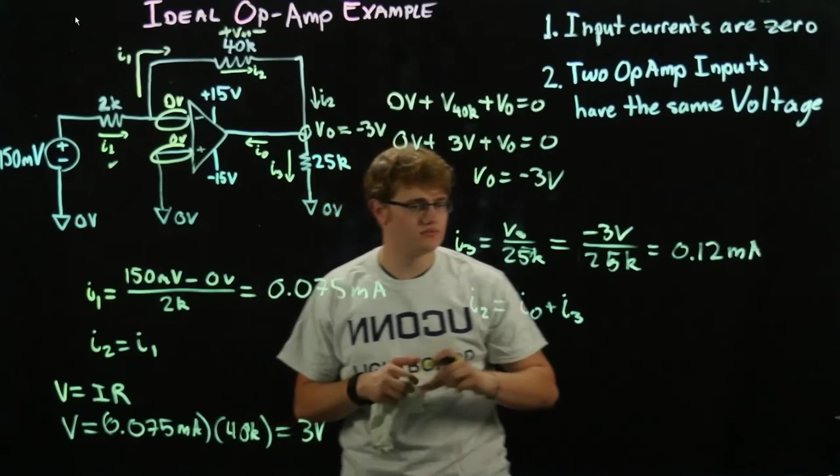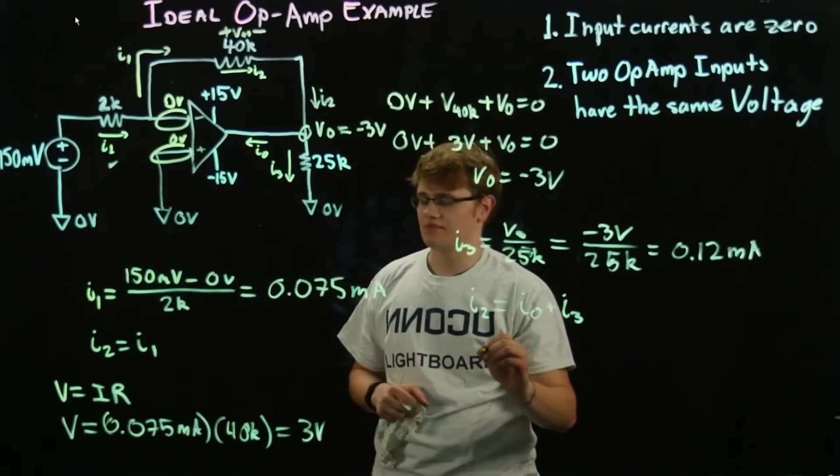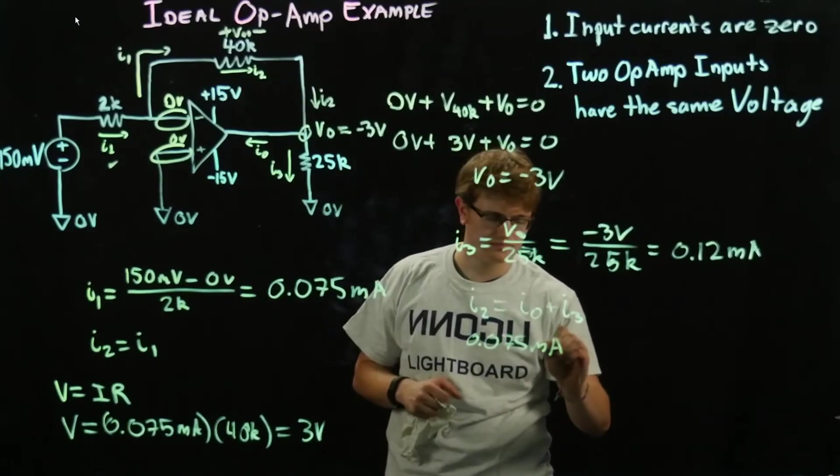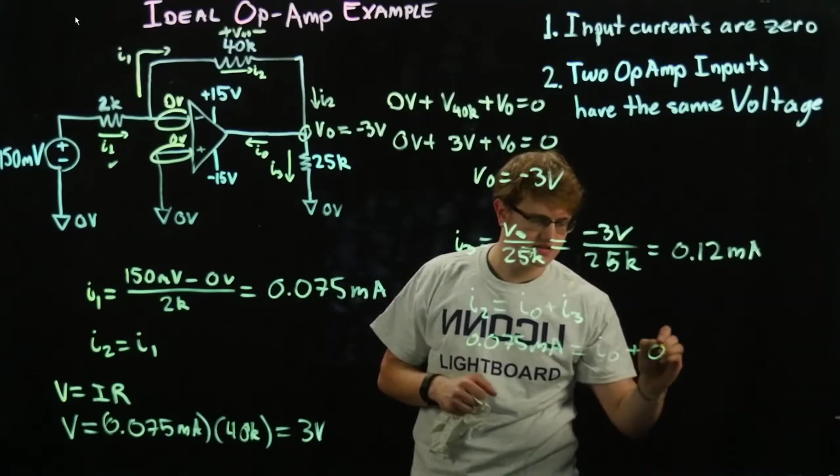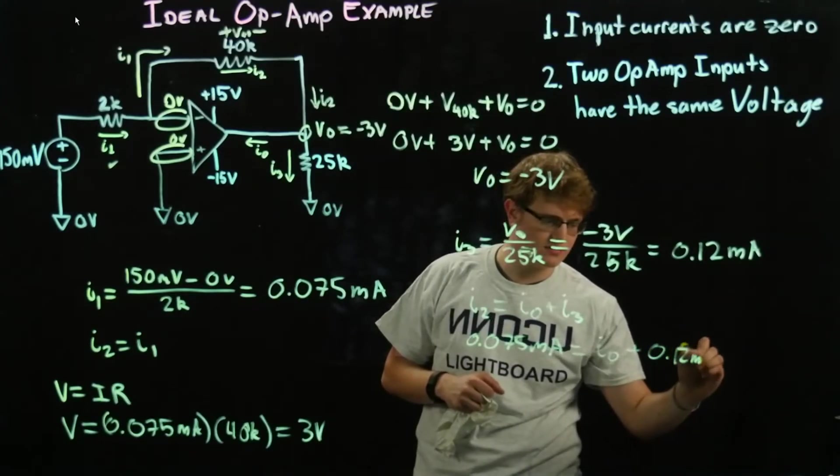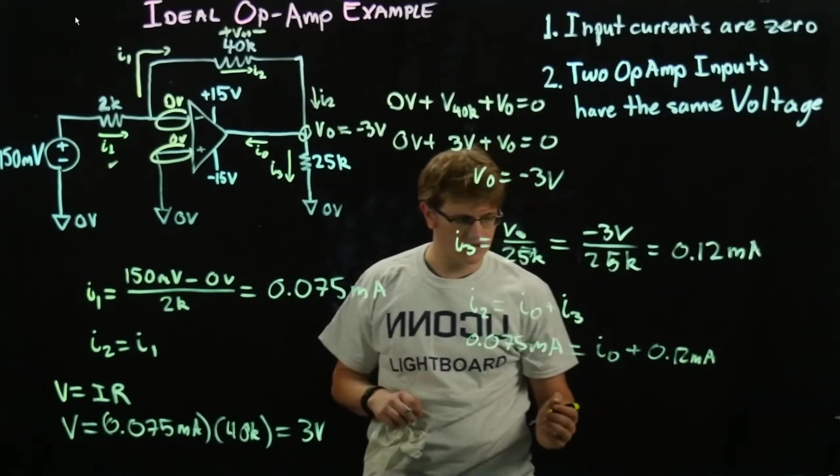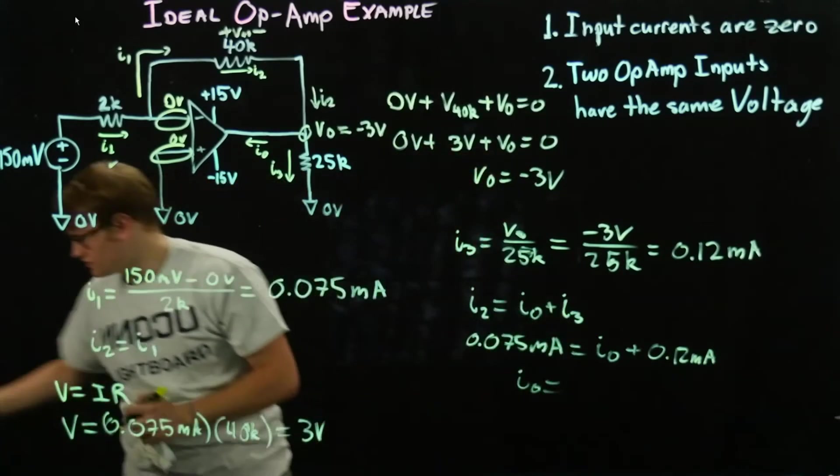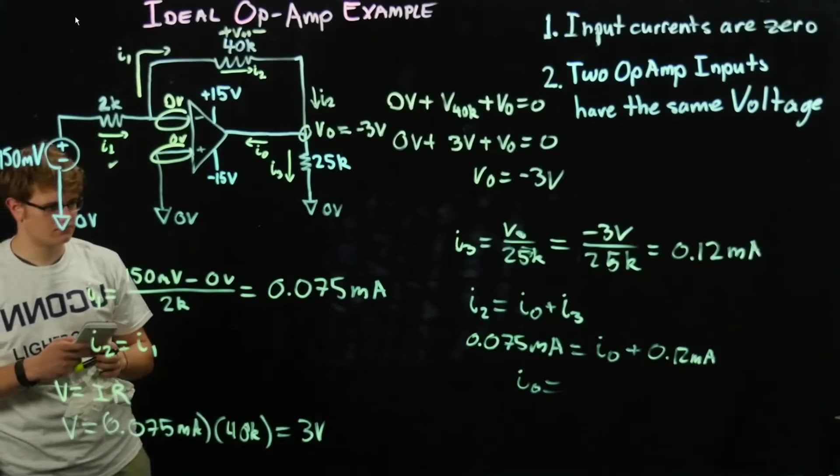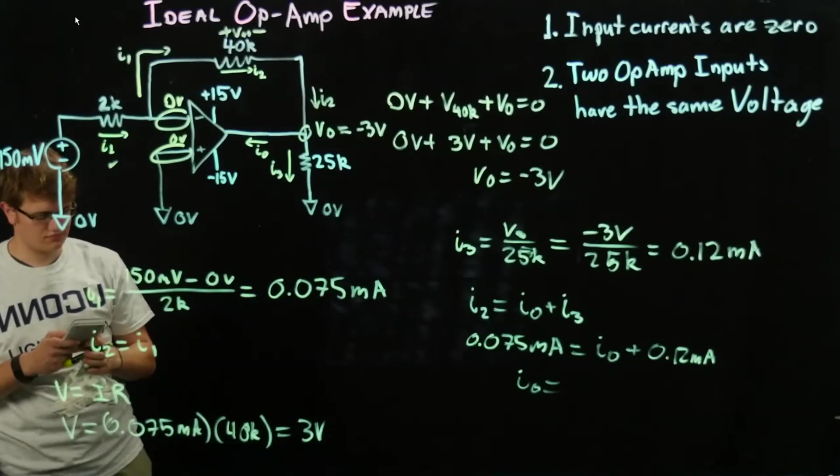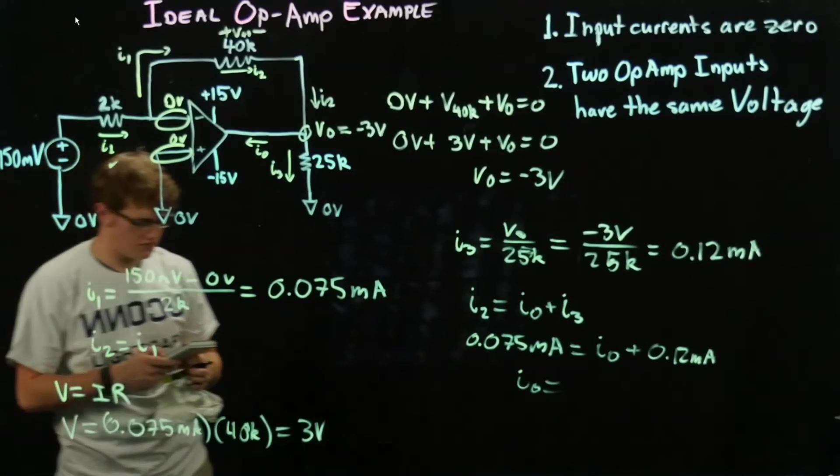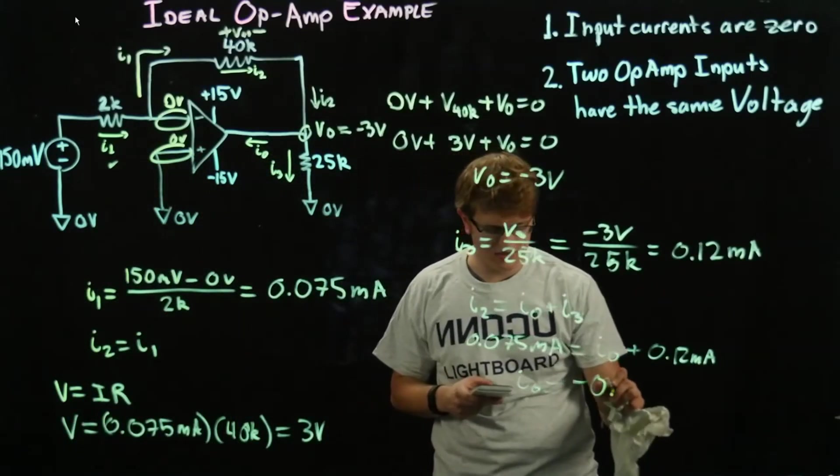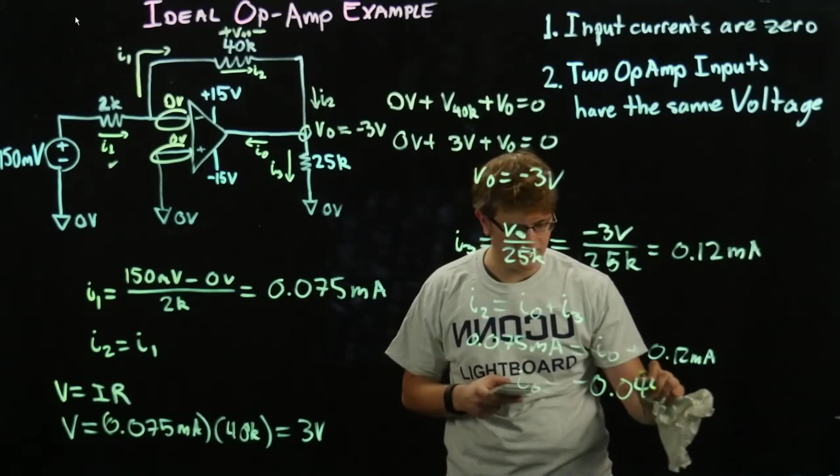We know I2, I2 is going to be 0.075 milliamps, I0 plus 0.12 milliamps, we're going to subtract these, I0 equals those values subtracted. So we're going to get negative 0.045 milliamps.